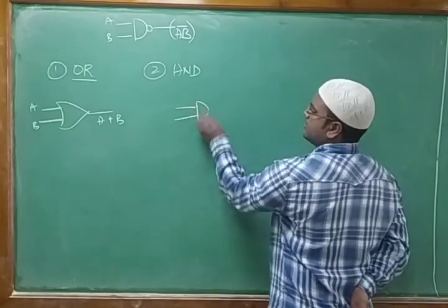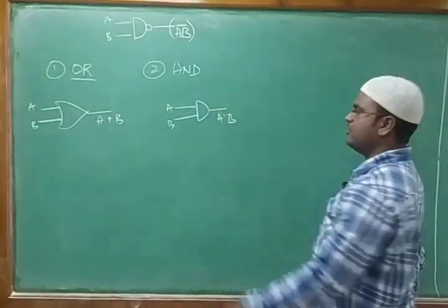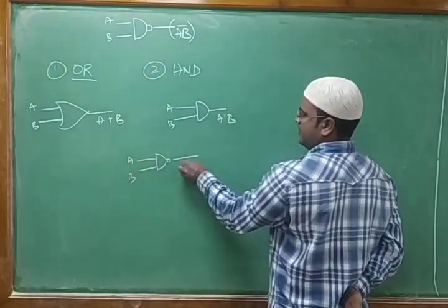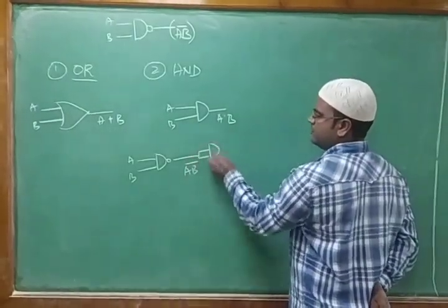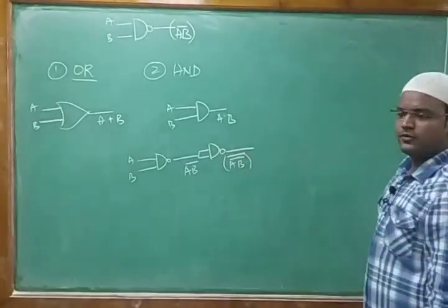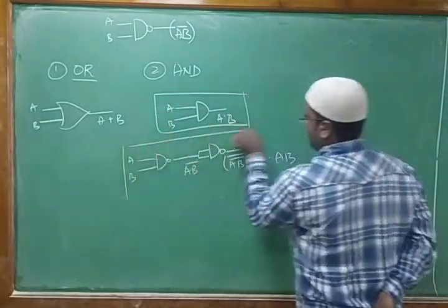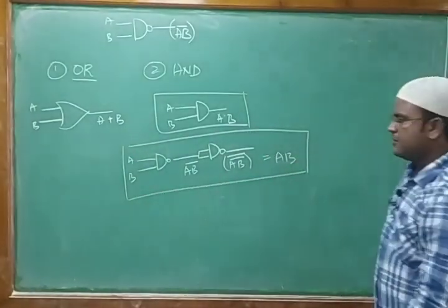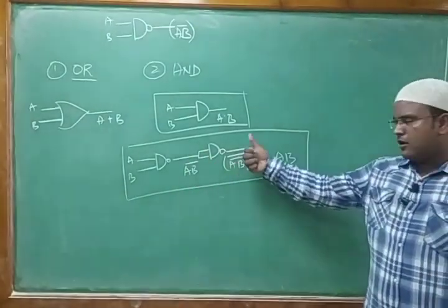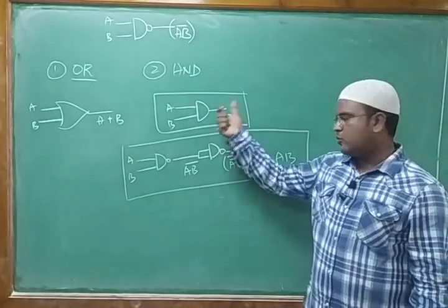For AND gate: if I take inputs A and B through one NAND gate I get (AB)̅. Passing that through one more NAND gate gives (AB)̅̅ = AB. So two NAND gates in series are equivalent to one AND gate. If they give you F = A·B and ask for a NAND implementation, connect two NAND gates in series.